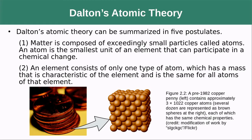Dalton's atomic theory has five postulates. The first is that matter is composed of exceedingly small particles called atoms. An atom is the smallest unit of an element that can participate in a chemical change — the smallest unit that has the properties of that element.